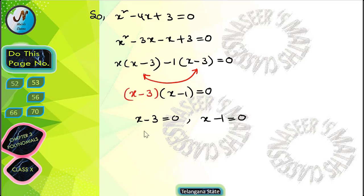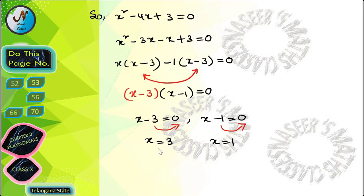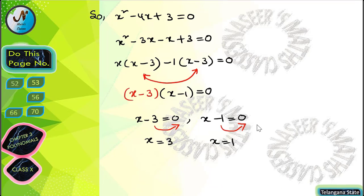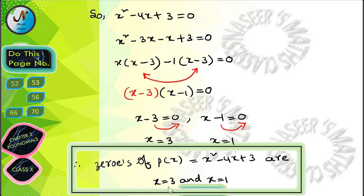We write x - 3 = 0 and x - 1 = 0. Transposing, we get x = 3 and x = 1. Therefore the zeros of p(x) = x² - 4x + 3 are x = 3 and x = 1.